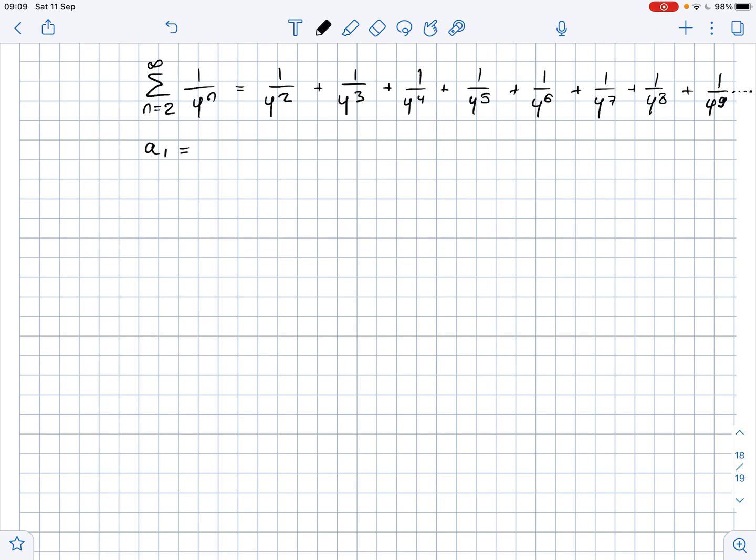If you look at these entries, for instance, let's look at entry A1. So A1 equals 1 over 4 squared, and A2 equals 1 over 4 cubed. A3 equals 1 over 4 to the fourth power.